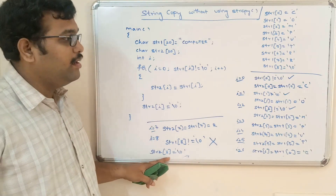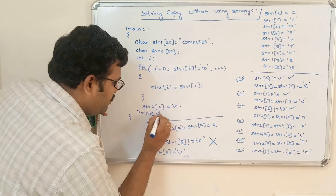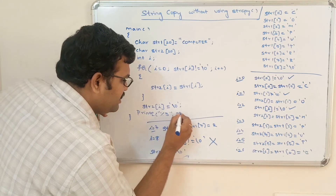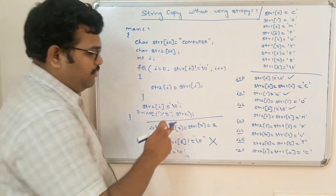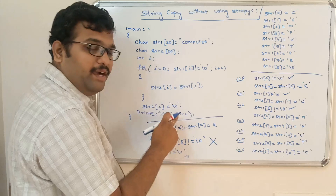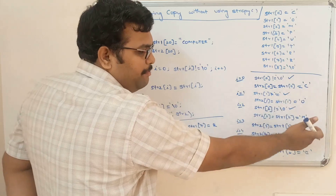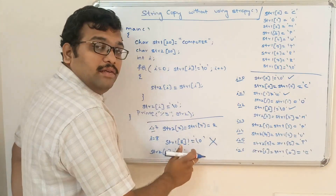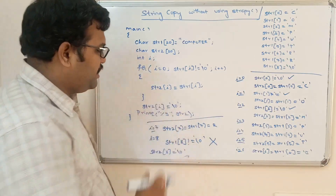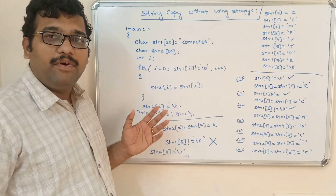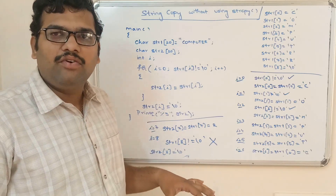Now we use printf with %s for str2. The compiler will print all characters until it reaches the null character, so it will print 'C', 'O', 'M', 'P', 'U', 'T', 'E', 'R', then stop at the null character — printing the complete word in string 2. This is a simple program for copying the content of one string to another without using the strcpy function.